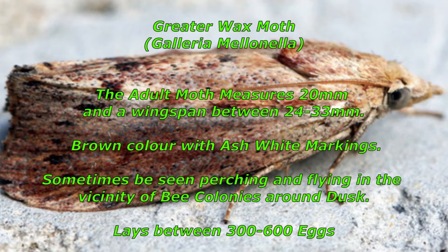The larvae burrow through combs, often just under the cappings, leaving a silken white tunnel behind them. Bee pupae and cells are rarely damaged, but sometimes become trapped in cells by silk threads and die. The larvae grow from 24 to 33 millimeters in length and when they pupate, often burrow into wooden frame components next to frame lugs or adjacent to hive walls, leaving boat-shaped furrows about 15 millimeters long. In serious infestations, the entire box can be filled with pupae in white silk cocoons, accompanied by dark specks of frass.